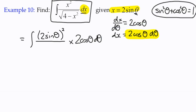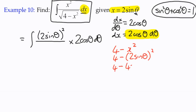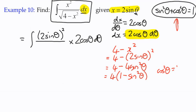For the denominator we need to substitute 4 minus x² — I'll simplify this outside the main working just so we can see what's going on. x² is (2sinθ)², so 4 minus x² becomes 4 minus 4sin²θ. Taking a common factor gives 4(1 - sin²θ). Using the identity, cos²θ = 1 - sin²θ, so 4 minus x² simplifies to 4cos²θ.